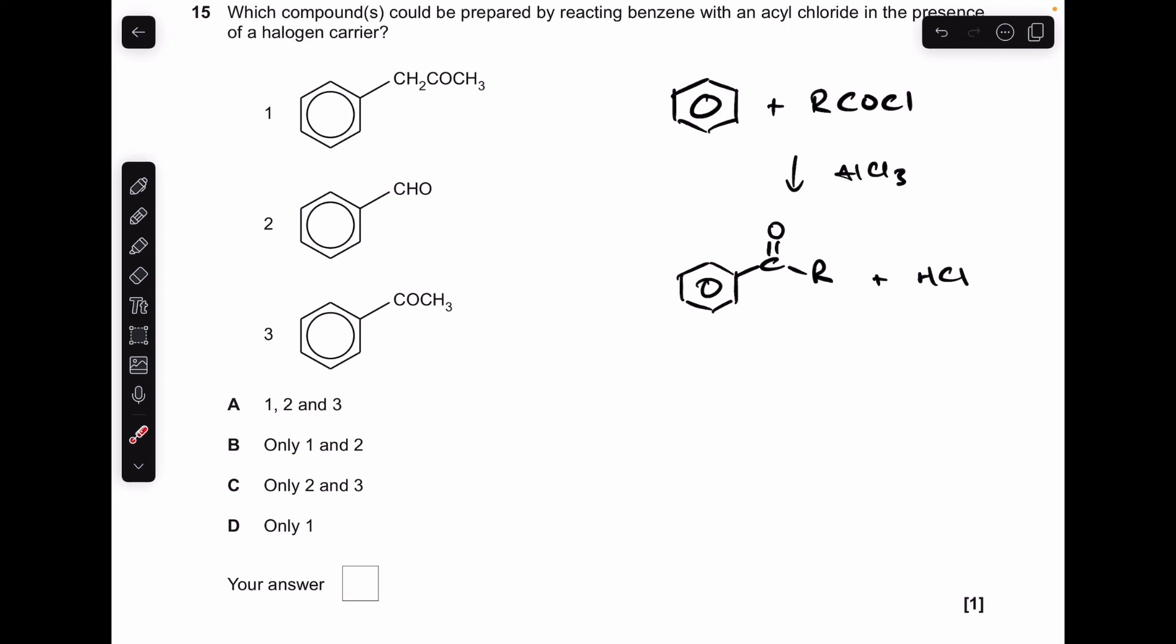So in one, we don't have that. We've got CH2, then the C=O, so that's not right. This one here, yeah, we've got a C=O and an H after it, so 2 is okay. And 3 is okay as well, because we've got C=O, then CH3. 2 and 3 only, C was the answer.